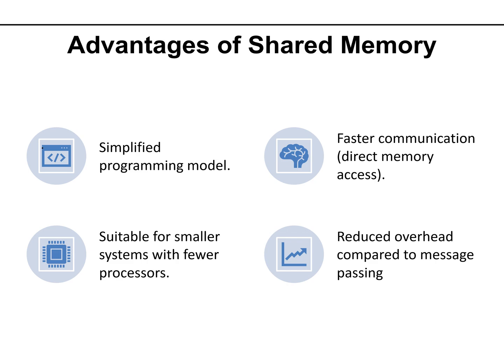Why might you choose shared memory? It is relatively easy to program and offers faster communication through direct memory access, so there is no need to communicate explicitly. It is suitable for smaller systems with fewer processors, as the bottleneck increases as the number of processors increases. Shared memory systems are often faster when a small number of processors are involved.